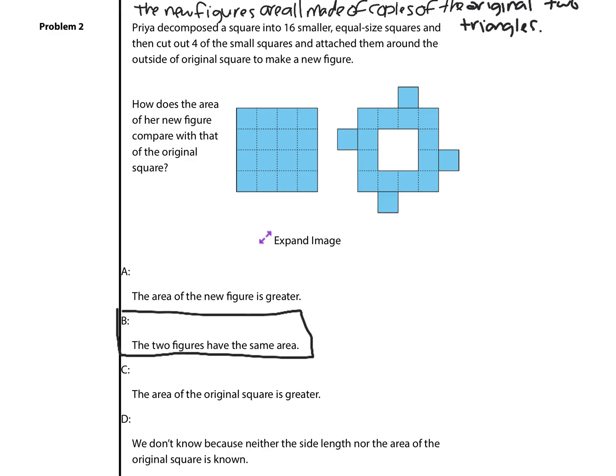You can literally count here. 1, 2, 3, 4, 5, 6, 7, 8, 9, 10, 11, 12, 13, 14, 15, 16. It has an area of 16 square units. What about the next one? Let me change that color. 1, 2, 3, 4, 5, 6, 7, 8, 9, 10, 11, 12, and then the 4 that got moved. 13, 14, 15, 16. They both have an area of 16 square units.